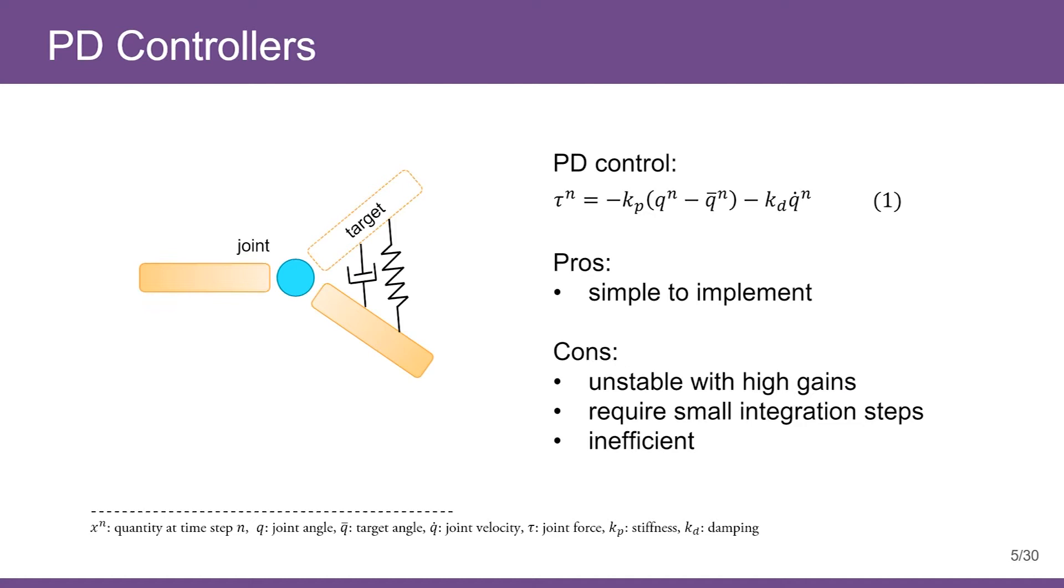In physics-based character control, PD controllers are most commonly used to model joint actuators. Given a target, joint force can be computed based on errors between current joint angle and the target angle. These types of PD controllers are simple but numerically unstable with high gains and usually require extremely small simulation time steps.